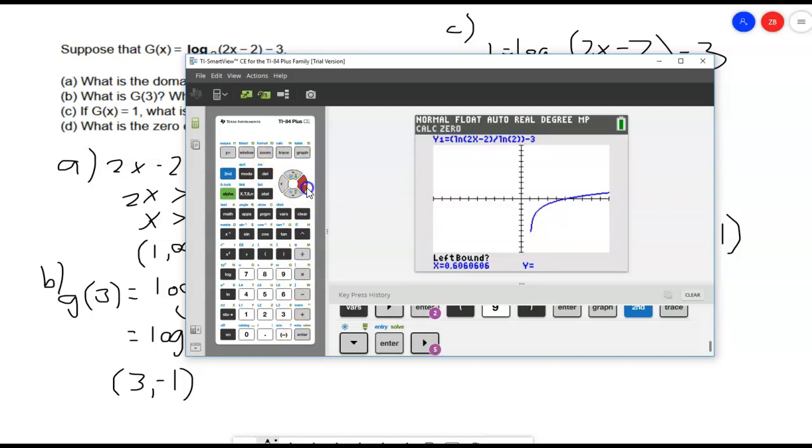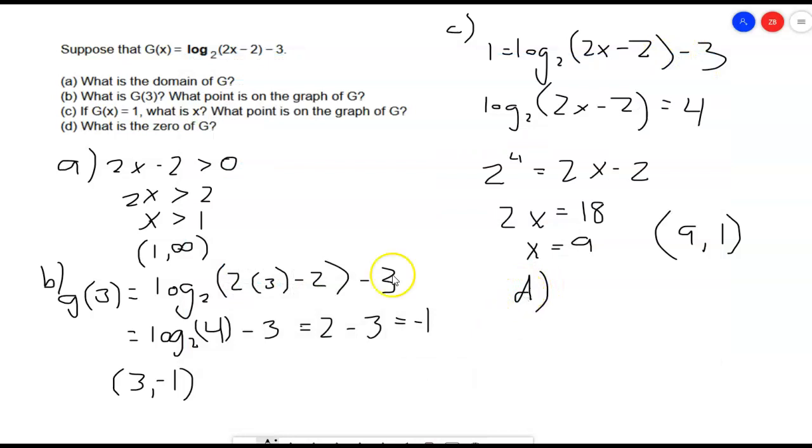So, first, I need a value, a left bound somewhere on the left of that point that it crosses the x-axis. Hit enter there. And then just some point to the right. This is just so we don't get multiple points. And enter. And sure enough, x is equal to 5. And that's when y is equal to 0. So, the 0 of g is x is equal to 5.